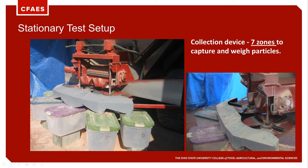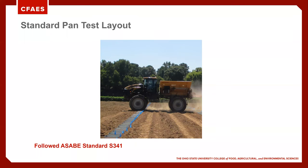All seven zones were weighed so we understood where the exit point of fertilizer was for the different disc speed and application rate treatments. For our standard pan test, we followed ASABE standard S341. We used standardized pans positioned at two-and-a-half feet apart. Again, we collect that data and understand pattern uniformity and spread width.